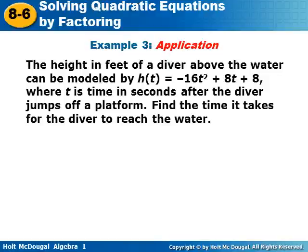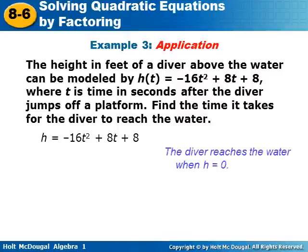The height in feet of a diver above the water can be modeled by h(t) equals negative 16t² plus 8t plus 8, where t is the time in seconds after the diver jumps off a platform. Find the time it takes for the diver to reach the water. The diver reaches the water when h equals zero, so we set zero equals negative 16t² plus 8t plus 8.